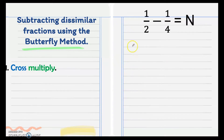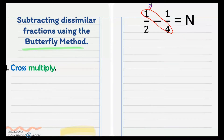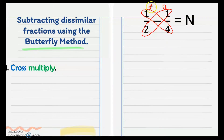All you need to do is to cross multiply — this 1 and 4 — and we put the answer here in the antenna of this butterfly. So we have 1 times 4 is 4, and then this 1 and 2: 1 times 2 we have 2, and we put it in the other antenna. Then we subtract — we have 4 minus 2 — so we subtract the new numerators, which is 4 minus 2, that is 2.